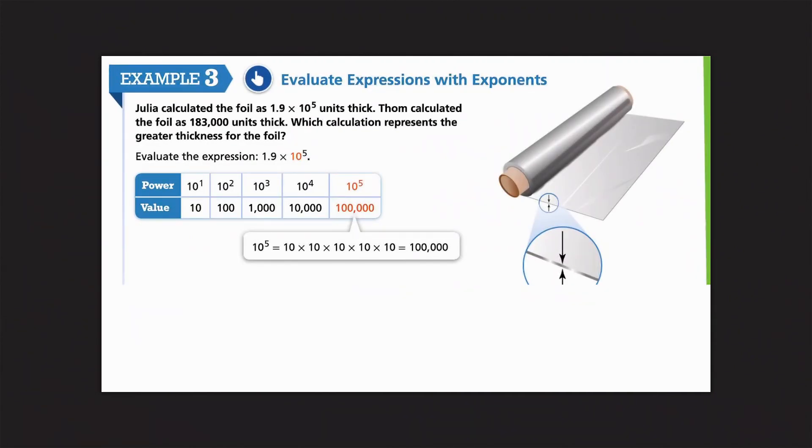And then, finally, we're going to look at ones that have a base of 10. So, this one's pretty cool because you will use this when you start doing things like chemistry and scientific notation and that kind of stuff. So, this is a really cool one that you will use again. There's always questions like, when am I going to use this? You will be using this one again in school. So, it says that Julia calculated the foil as 1.9 times 10 to the 5th power units thick. Tom calculated the foil as 183,000 units thick. Which calculation represents the greater thickness for the foil?